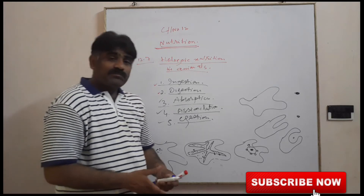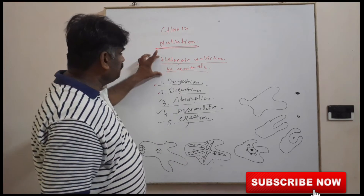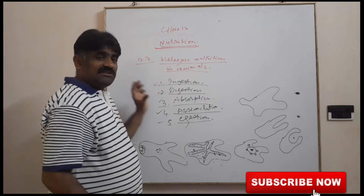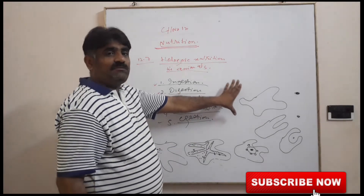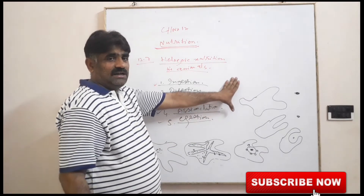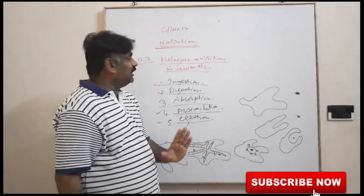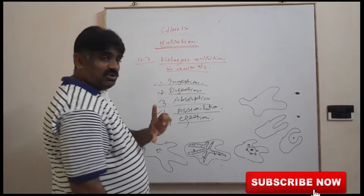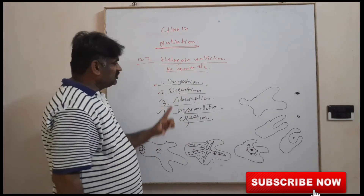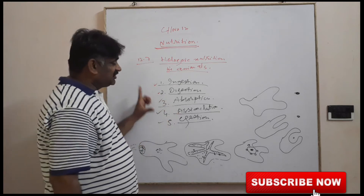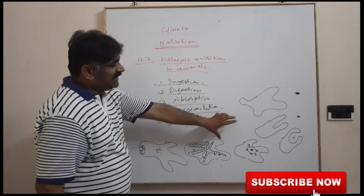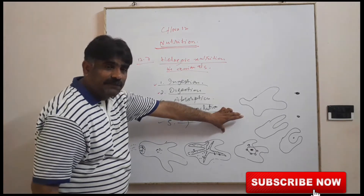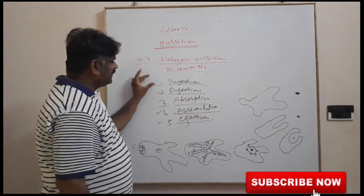So all holozoic nutrition steps are performed starting from protozoa — all animals perform holozoic nutrition. We have clearly studied holozoic nutrition taking the example of one-celled protozoa, amoeba.